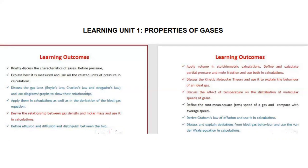When we talk about Boyle's and Charles's laws, there are certain variables we'll pay attention to. Avogadro's law involves what we call Avogadro's constant, which relates to the number of particles, atoms, or molecules of gases. We'll also use diagrams or graphs to show those relationships.